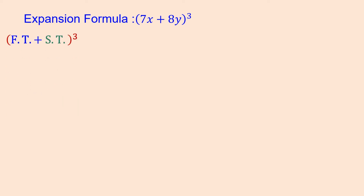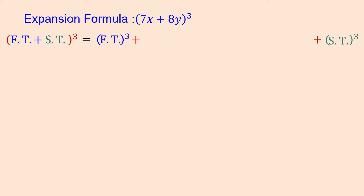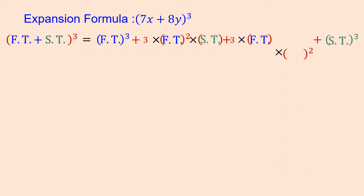The formula is: first term plus second term whole cube equals a cube, that is first term cube, plus the fourth term which is second term cube. The first middle term is 3 into first term square into second term, and the second middle term is 3 into first term into second term square.